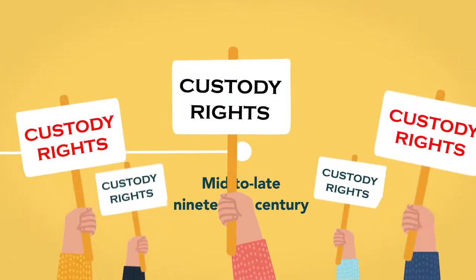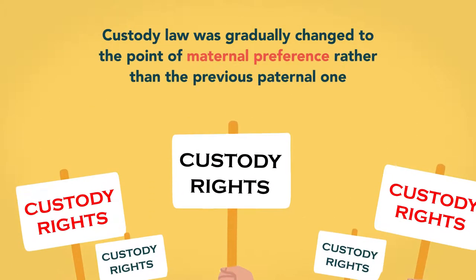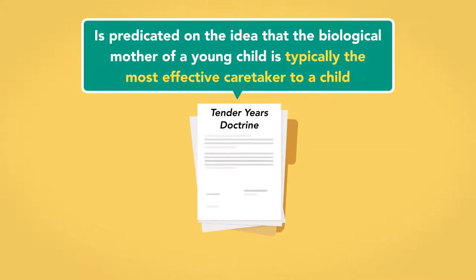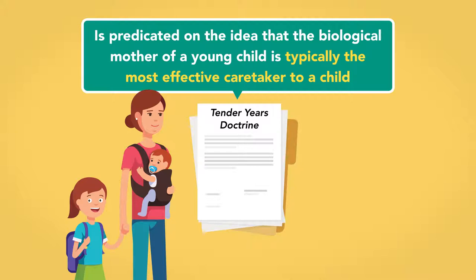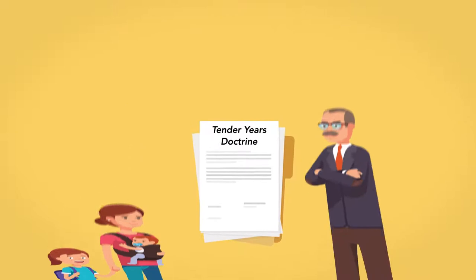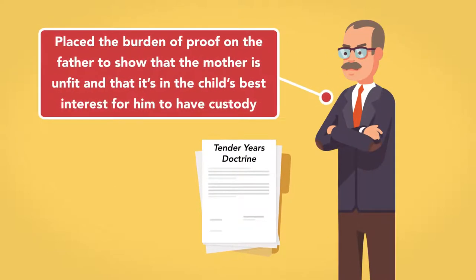Beginning in the mid to late 19th century, women's rights organizations began to advocate for custody rights, and custody law was gradually changed to the point of maternal preference rather than the previous paternal one. This maternal preference was called the tender years doctrine, predicated on the idea that the biological mother of a young child is typically the most effective caretaker. The doctrine established a presumption of maternal custody that could be overcome only by a finding that she was unfit.